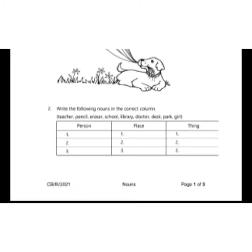Doctor in the column of person. Desk in the column of thing. Park in the column of place. Girl is the name of a person, so we will write girl in the column of person.